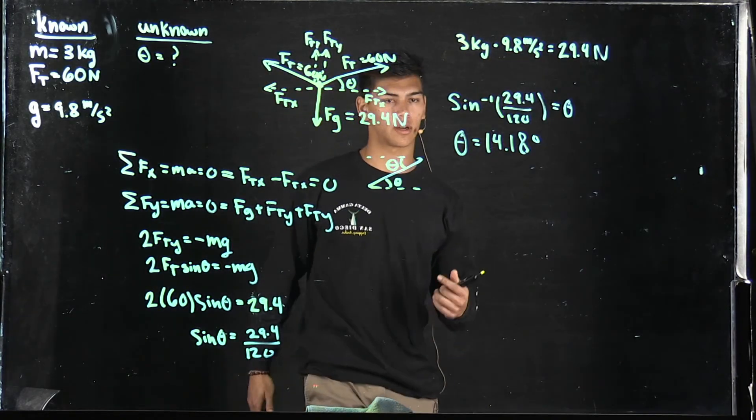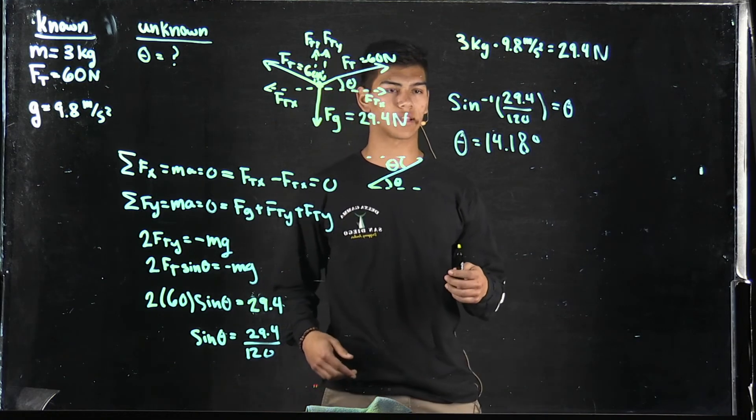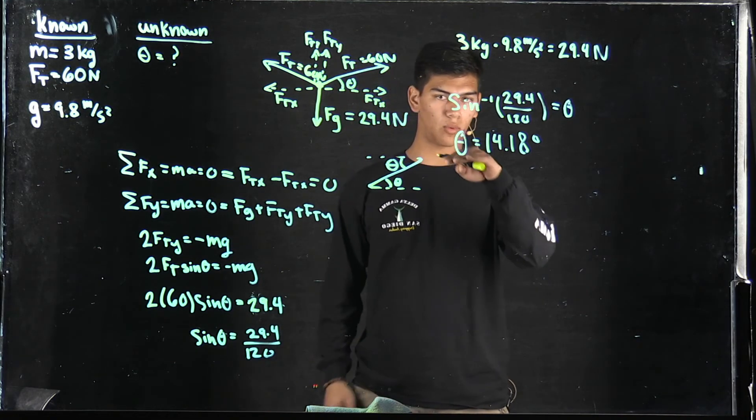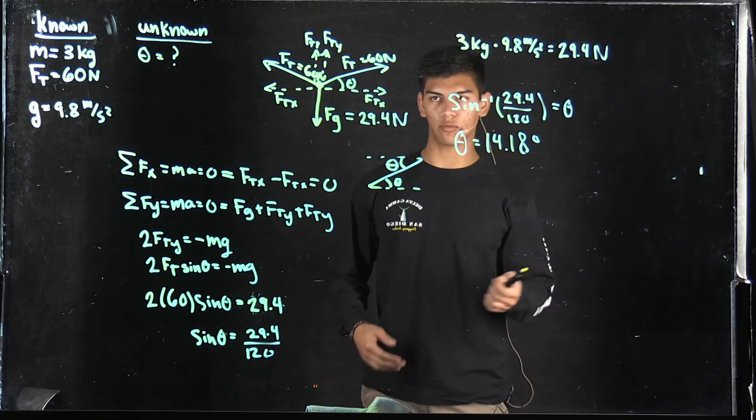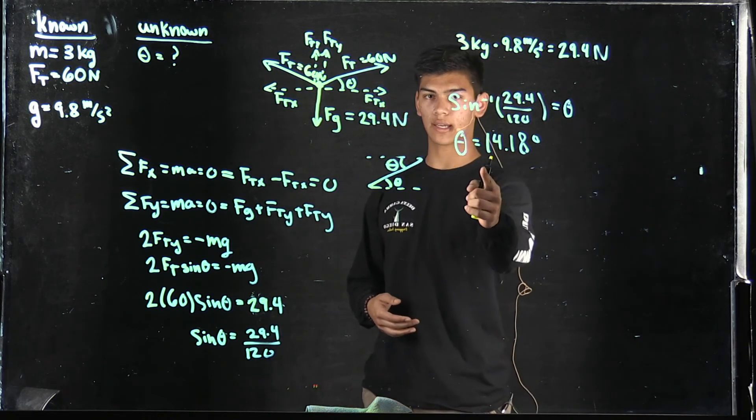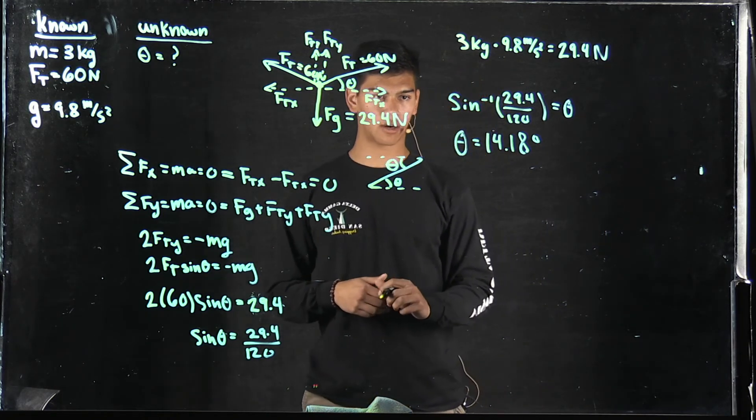I'm going to walk you through the second part of this problem, which is asking what will it take for the wire to be completely flat? When the wire is completely flat, we know that theta is going to be zero.